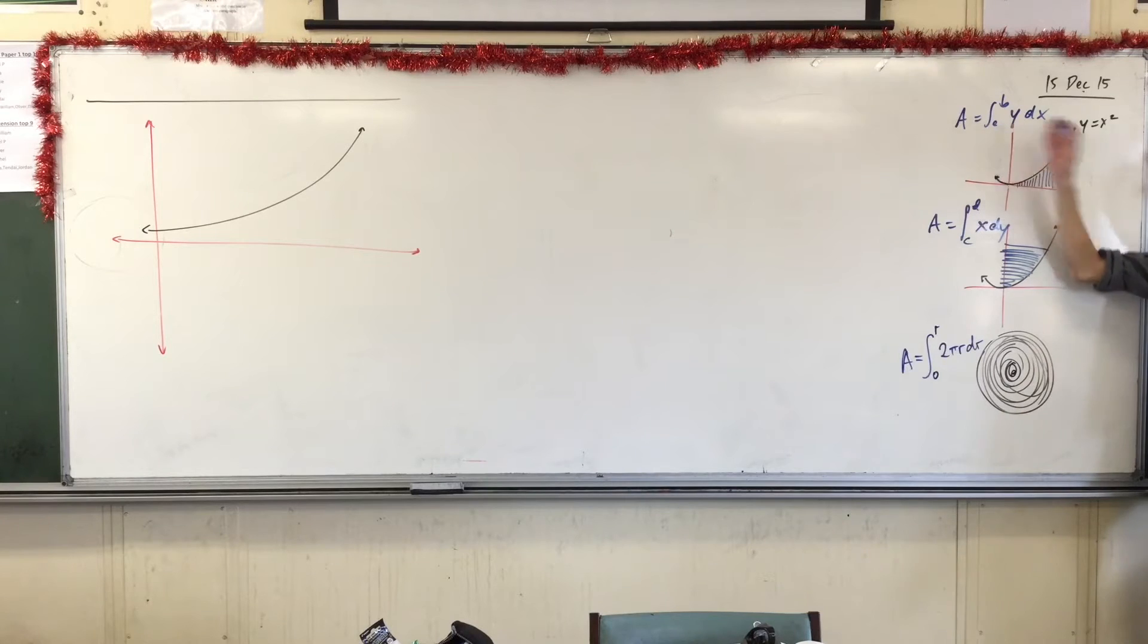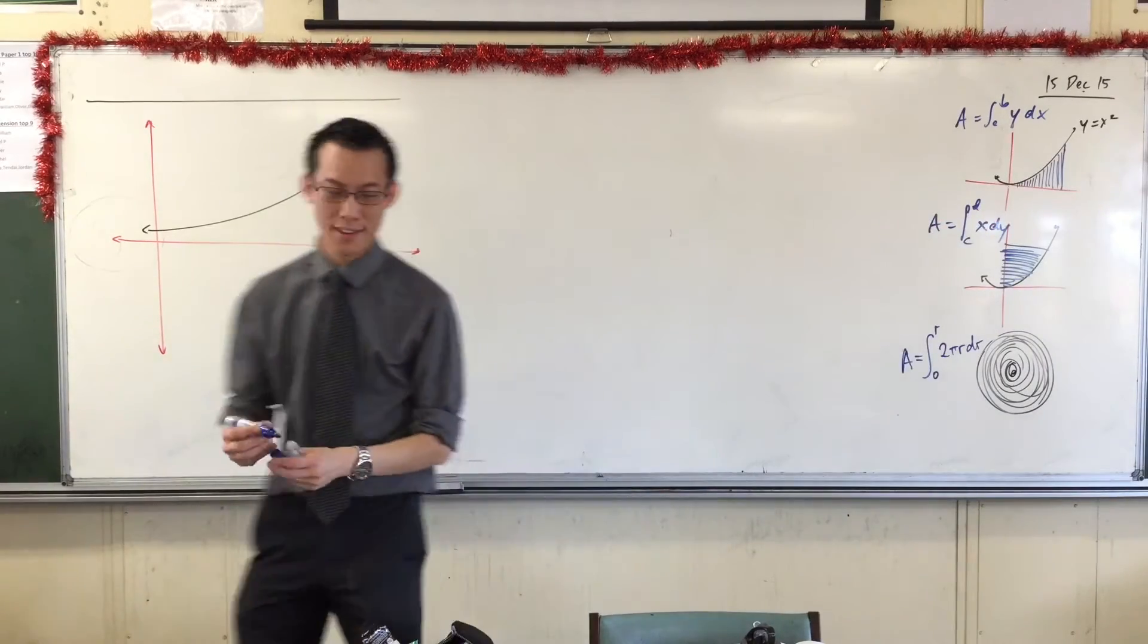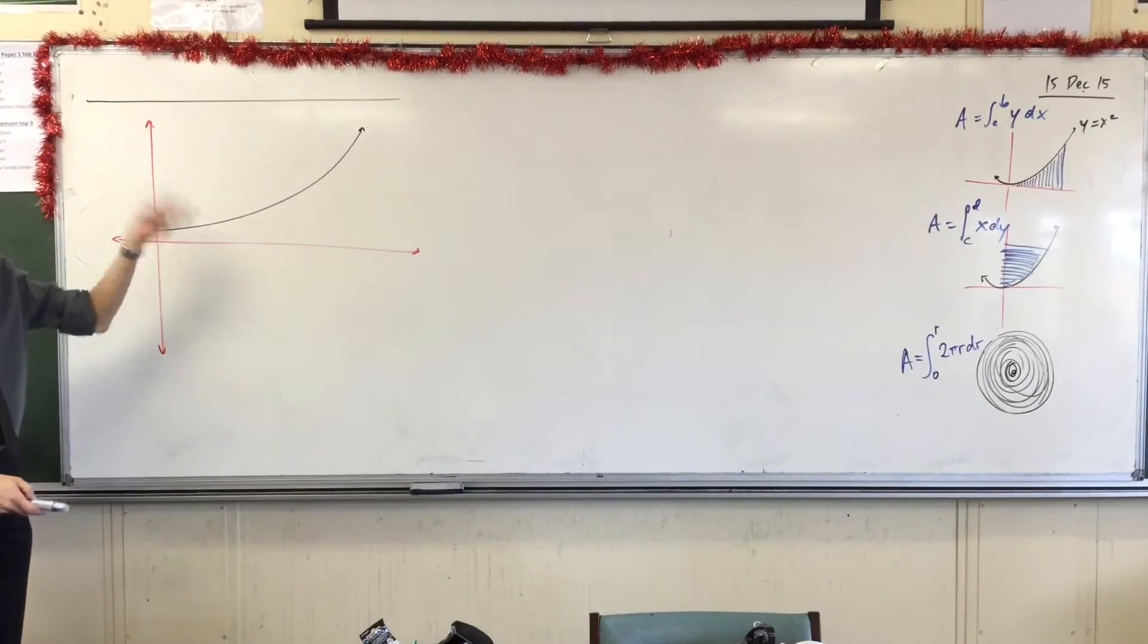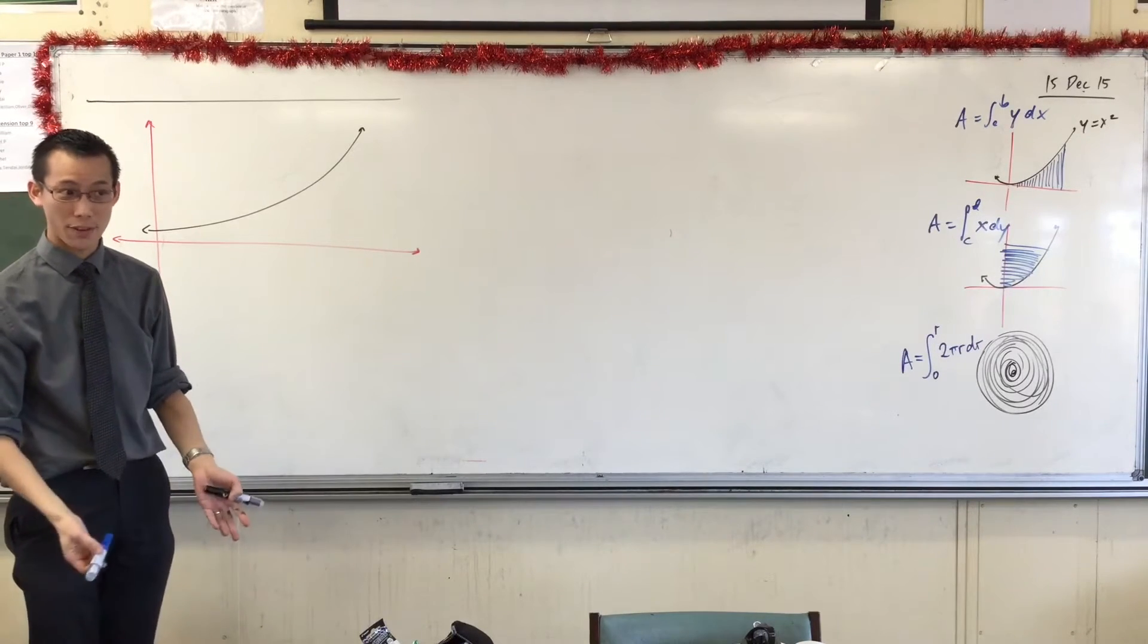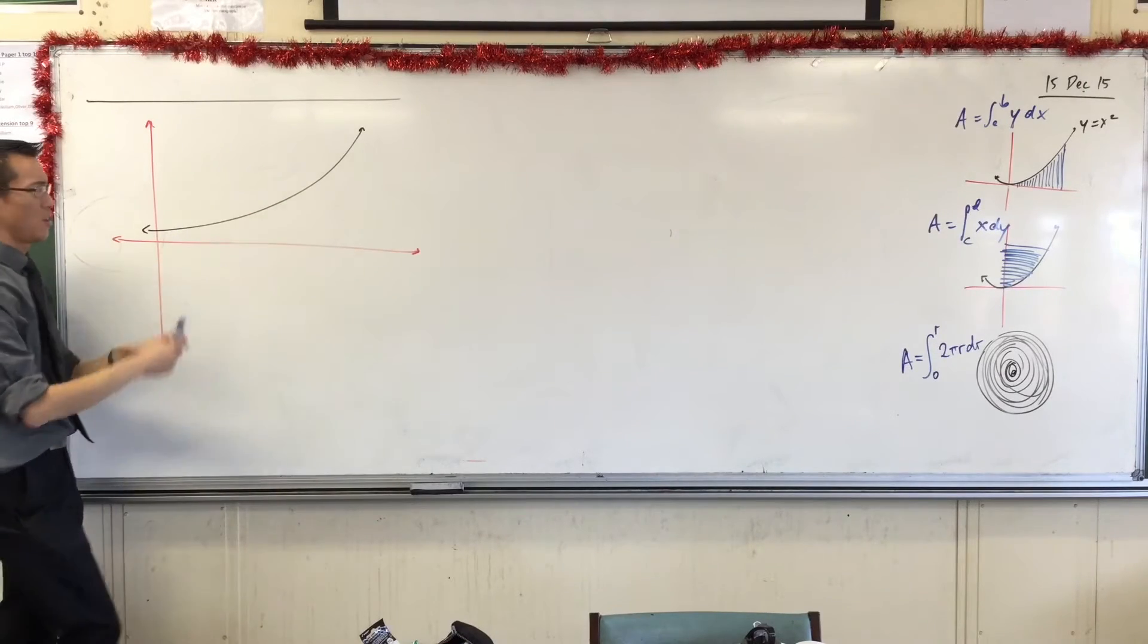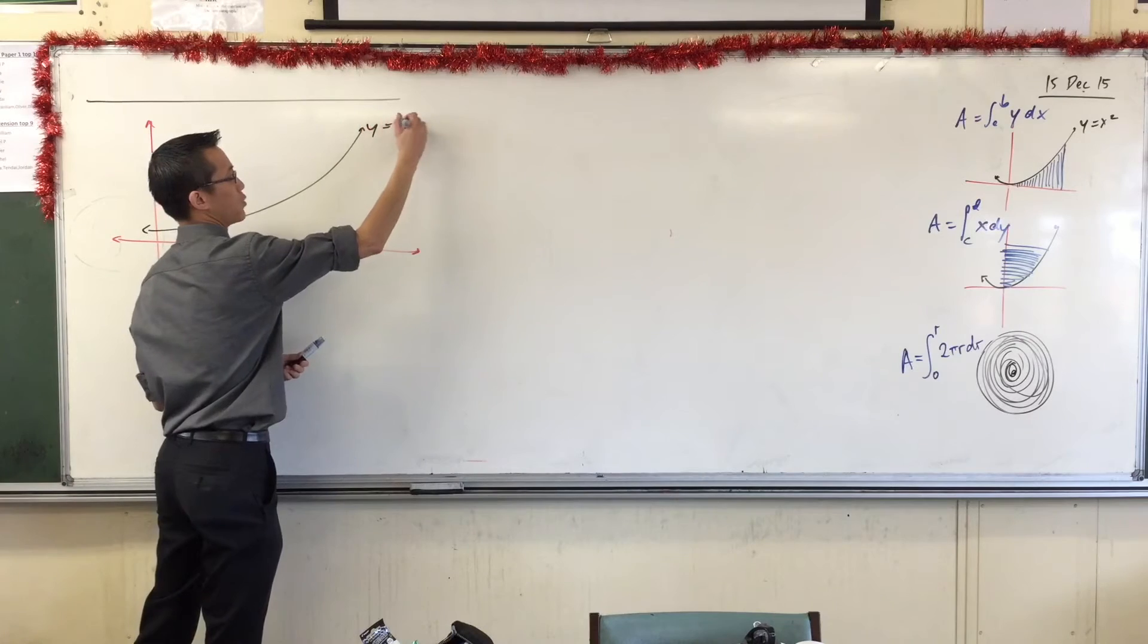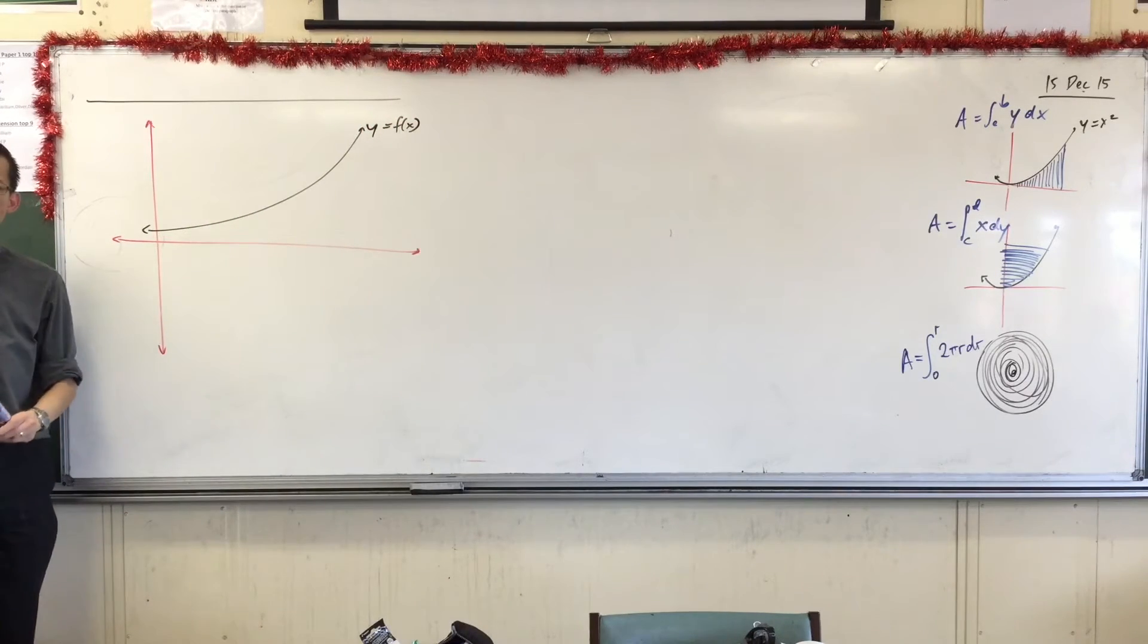So you can do rectangles standing up, rectangles sideways, circumferences. You can add up, you can integrate anything you like, which is what leads us to this graph. Now we're going to integrate something completely different. In fact, we're even going to be in a different dimension. But to help you understand what's going on, I need you to take this graph, we'll just call it y equals any old function of x.